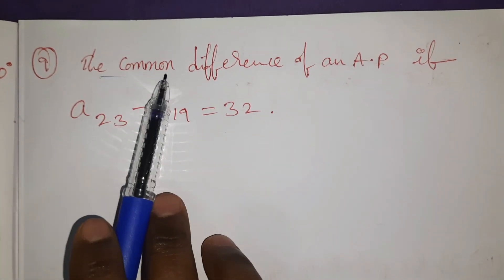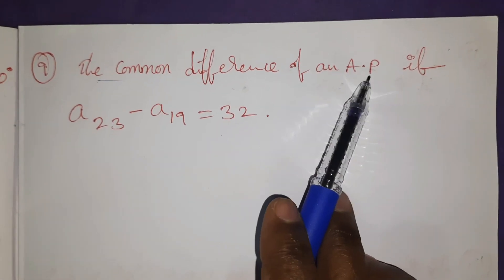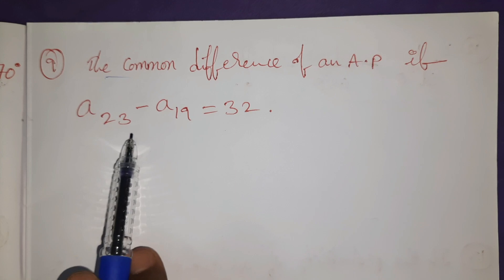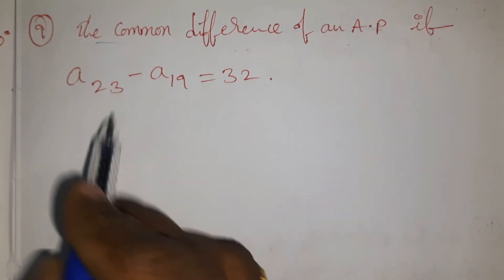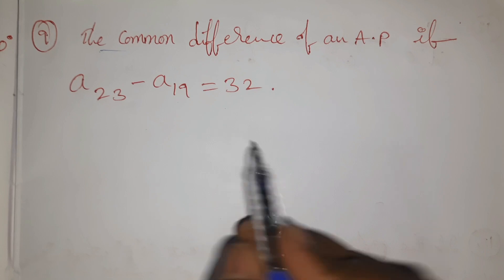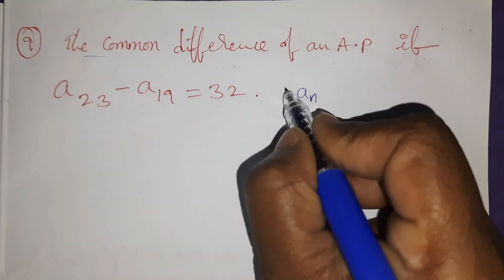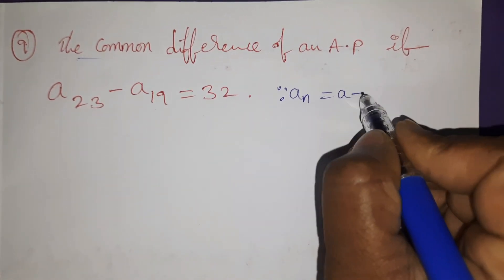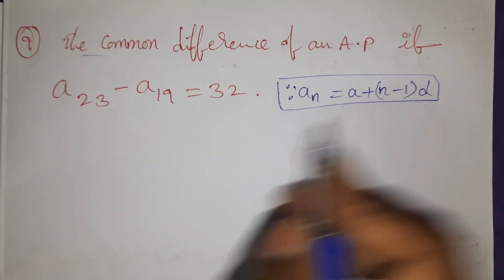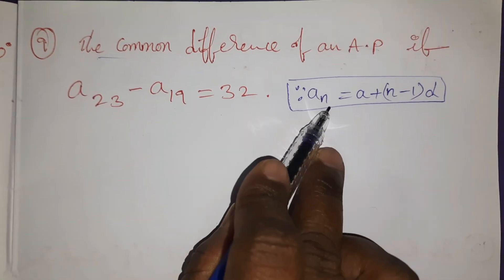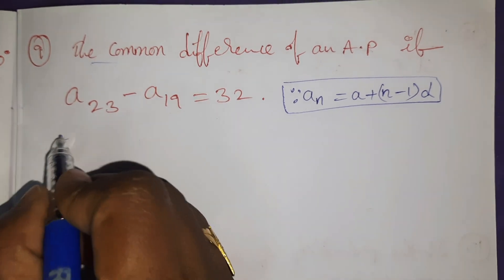Find the common difference of AP if A₂₃ - A₁₉ = 32. A₂₃, we have Aₙ formula: A + (N - 1) × D. A₂₃ means N in the place 23. So A + (23 - 1), 22D.